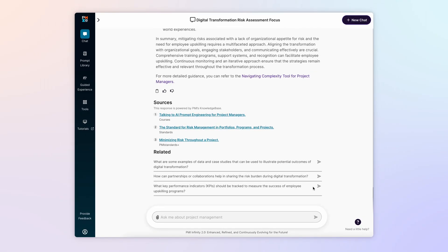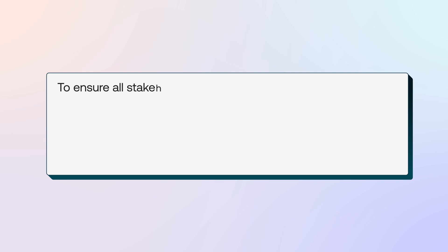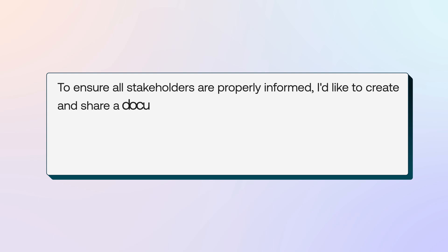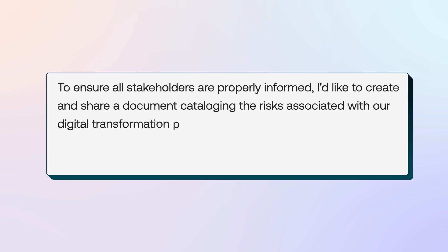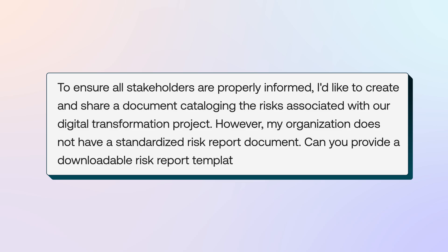Now you're ready to create a risk management plan document and would like to use an existing template. To ensure all stakeholders are properly informed, I'd like to create and share a document cataloging the risks associated with our digital transformation project. However, my organization does not have a standardized risk report document. Can you provide a downloadable risk report template?